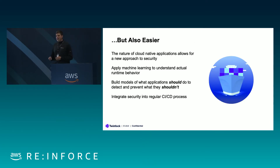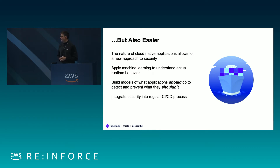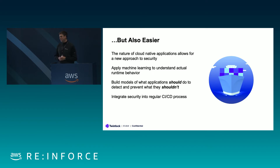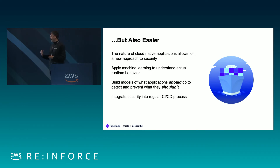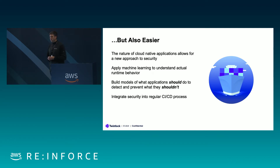At the same time, there are tremendous opportunities where cloud-native provides advantages from a security perspective. The ability to leverage automation can really help scale security in new ways. The ability to apply machine learning to actually understand application runtime behavior is a trend that's only growing, and that really allows a security team to understand how their applications are not just running, but how they should be running securely. If we can model what applications should do, it becomes easier to isolate them and alert or block on activity when they're doing something they shouldn't — whether that's process, file system activity, or networking components.